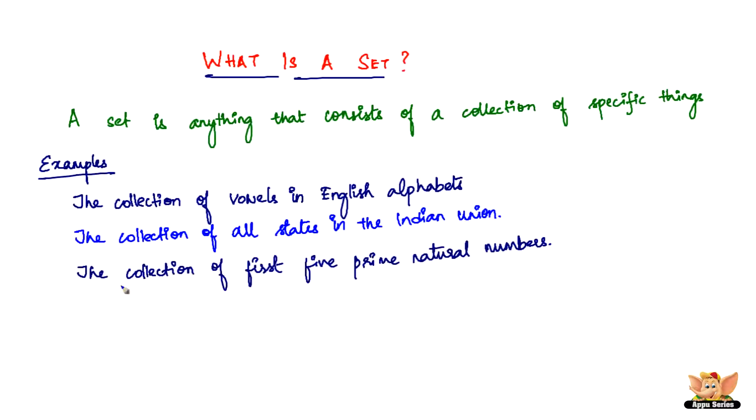We also have another example, which is a collection of the first five prime natural numbers. It is pretty specific. It's just first five prime natural numbers, which are 2, 3, 5, 7 and 11. It's nothing else apart from this.